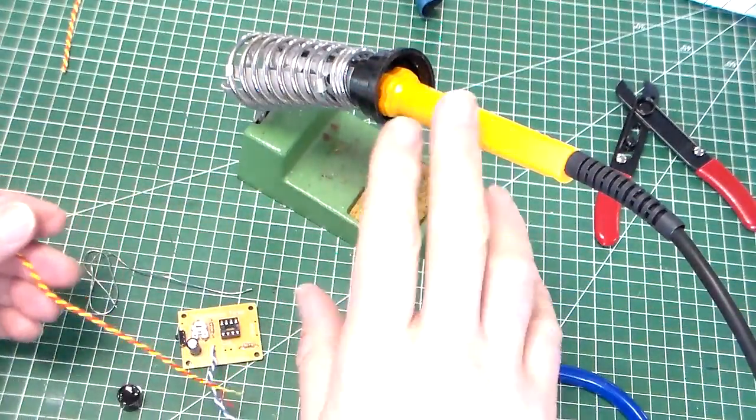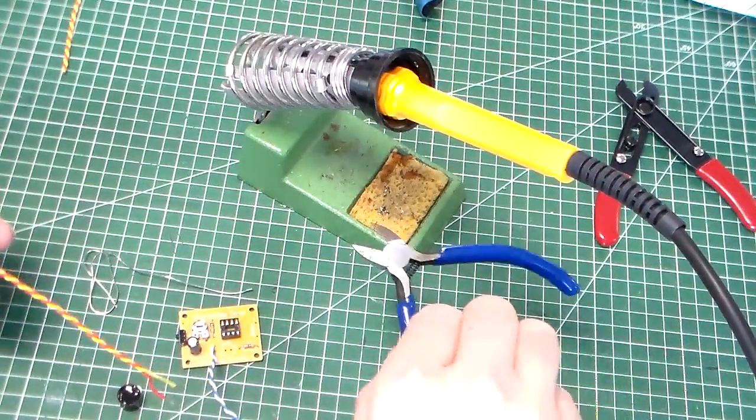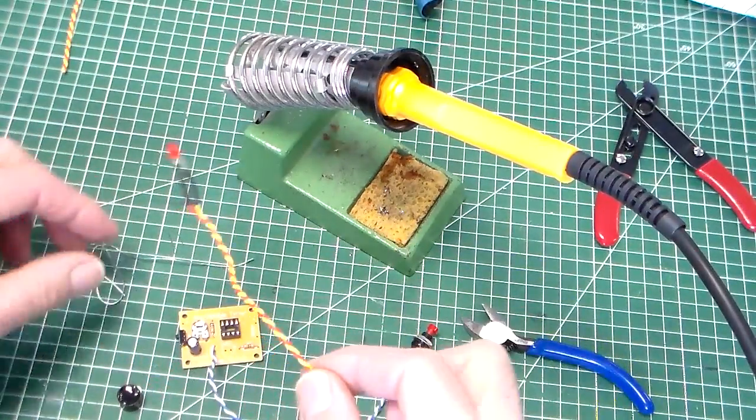The equipment we're using are the soldering iron, the soldering iron stand, some side cutters, and a small amount of solder.